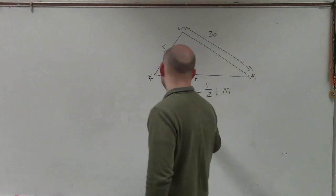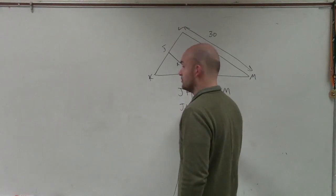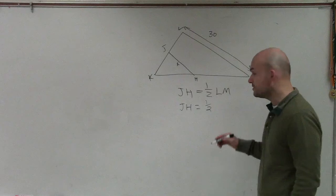So therefore, JH equals, JH is x, right? We don't know what it is. It equals one-half of what's LM. That's 30.